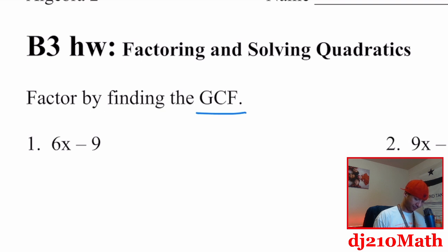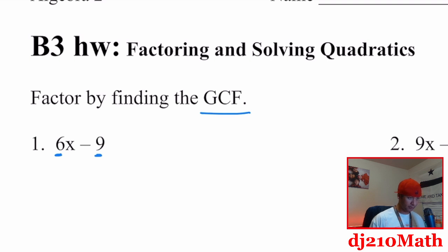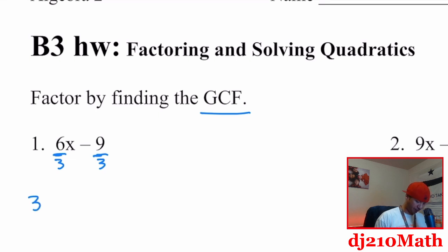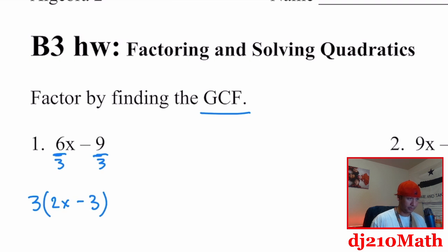It's a binomial — two terms. There's a number that is common to both: six and nine. It's going to be three. So if I factor out a three, that means I'm dividing everything by that number, which means I can pull that number out front. Six divided by three is two X. Nine divided by three is three. And three is the greatest common factor.